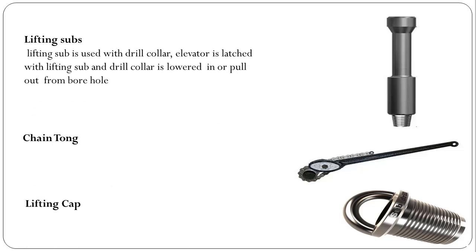Lifting sub. The lifting sub is used with the drill collar — the elevator latches around the lifting sub and the drill collar is lowered in or pulled out from the borehole. This is a picture of the lifting sub; it has a groove where we can seat the elevator. Because the drill collar OD is greater than the drill pipe and they don't have a groove for the elevator, that's why we use a lifting sub, and we can use the same elevator as we use for drill pipe or heavyweight drill pipe.